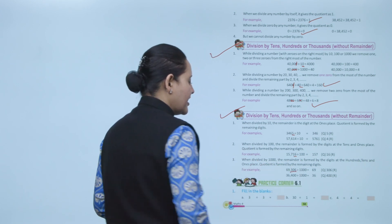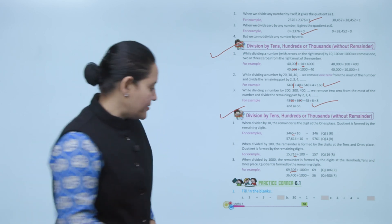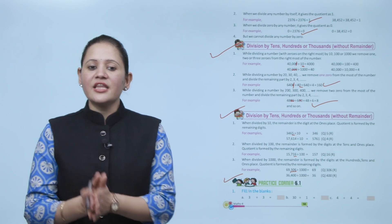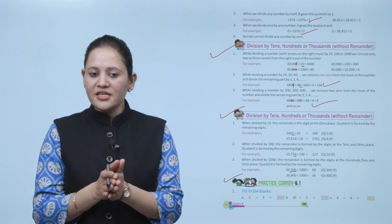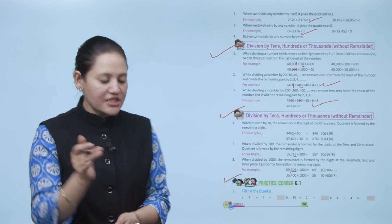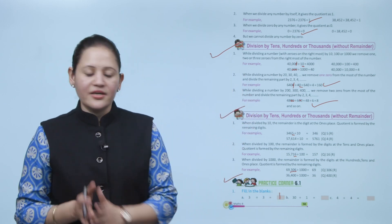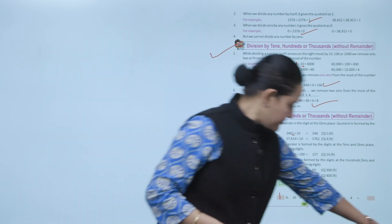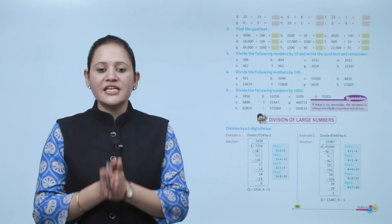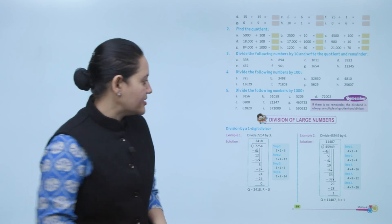Practice corner 6.1: fill in the blanks. For 3 divided by 3 — as we know, if we divide a number by the same number the quotient is 1, so the answer is 1. Practice all the questions of this exercise, then we'll move to the next topic: division of large numbers.